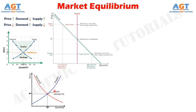The market equilibrium price is also called the market clearing price because at this price the exact quantity that producers take to market will be bought by consumers, and there will be nothing left over. When the market is in equilibrium, there is no tendency for prices to change. This is efficient because there is neither an excess of supply and wasted output, nor a shortage. The market clears efficiently.